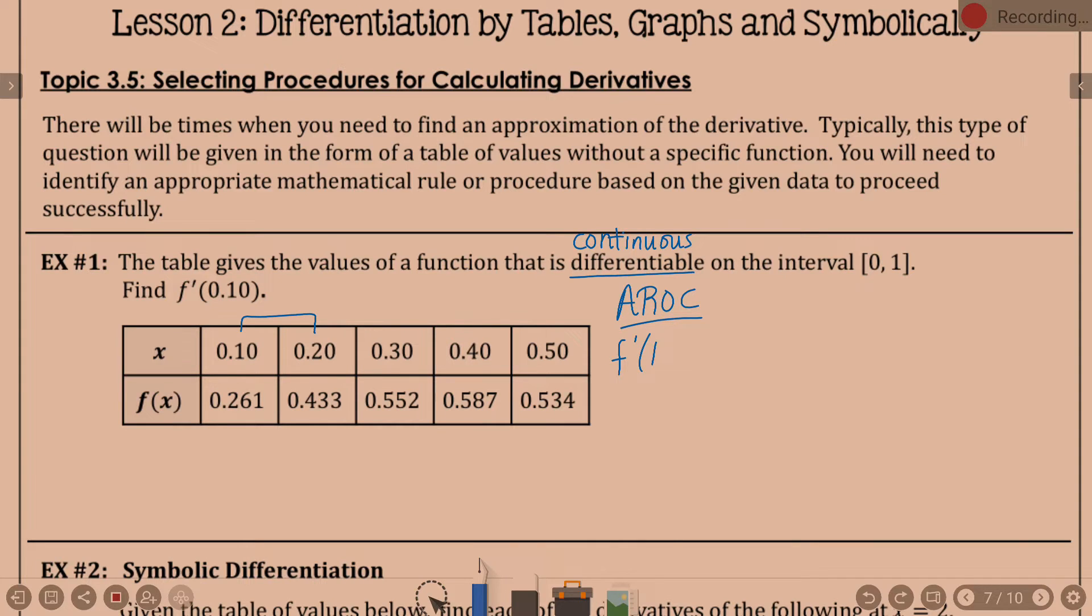I would suggest AROC. So, f prime of 1 tenth, I'm going to write this in terms of f first, in terms of the fact that I'm going to do f of 2 tenths minus f of 1 tenth. So, that's doing my y minus y value, right? Over x minus x, which would be 2 tenths minus 1 tenth. That's a good way if you need to write it out, and you don't have the values or whatever, that's a good general form to put it in.